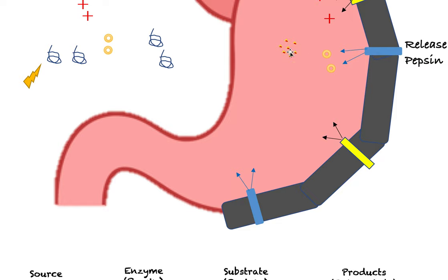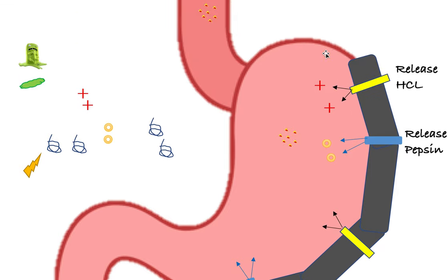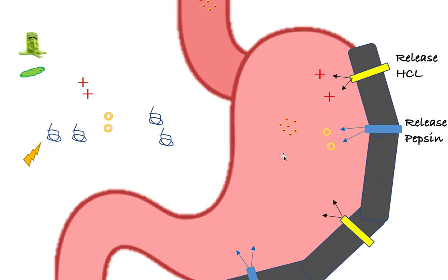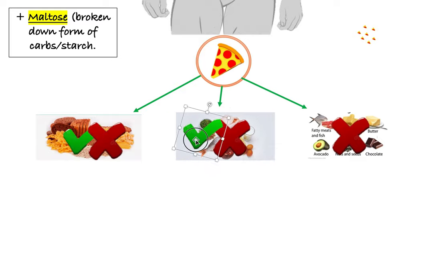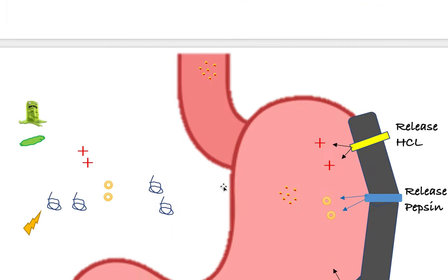We know now that proteins were broken down by pepsin into polypeptides — something smaller than proteins, but not small enough just yet. We can update the diagram: proteins have started to break down, but they're not finished. Polypeptides is not the smallest structure — we want to break them down even further to their smallest form later. We started this process but we're not finished; that's going to happen after the stomach.